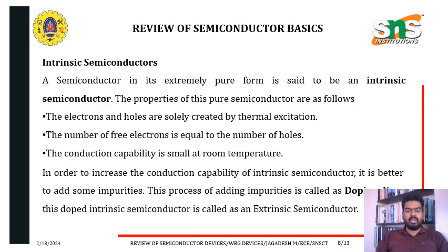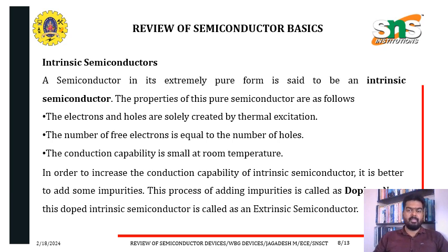An intrinsic semiconductor is an extremely pure form of semiconductor. Its properties are: electrons and holes are solely created by thermal excitation; the number of free electrons equals the number of holes; and conduction capability is small at room temperature. To increase conduction capability, impurities are added — this process is called doping, and after doping the intrinsic semiconductor is called an extrinsic semiconductor.